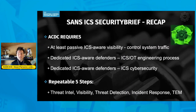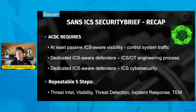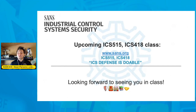To recap, the ACDC requires at least passive ICS-aware visibility at the control system traffic level, and dedicated ICS-aware defenders who know the engineering aspects as well as ICS security. The five steps are: threat intelligence consumption, visibility, threat detection, incident response, and threat and environment manipulation. That's a quick run-through of the active cyber defense cycle in control system environments. Hopefully that's been helpful, and I hope to see you in class soon.